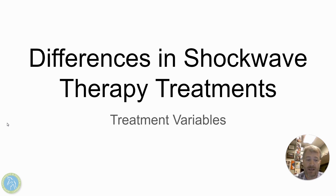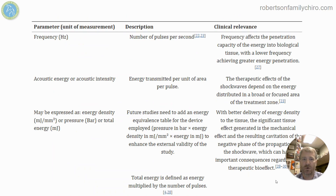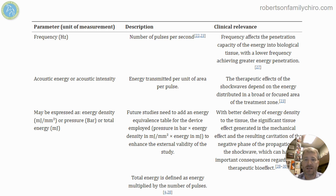Differences in shockwave therapy treatments — this question comes up because there are quite a few differences between the types of units. We have the focused type and the radial that spreads the energy. It can be created through either a mechanical pounding of tissue, or electric or sound that pushes energy into the tissue. Other variables include pulses per second — how many times is that energy getting into the body per second or per minute — the surface area involved, and the type of energy transmitted per pulse.